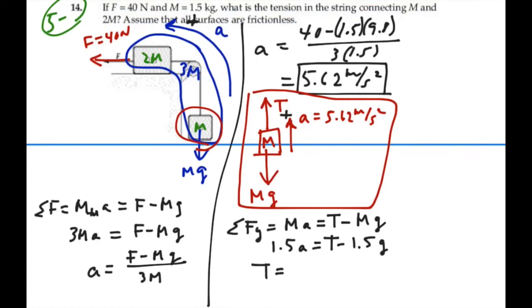In other words, T is going to equal 1.5 times A, 5.62, plus 1.5 times 9.8. And that will give us a value of 23.1 newtons. I guess I should write this out since we've been using N for normal force. So our answer is 23.1 newtons. That is the tension in the chord for this problem.